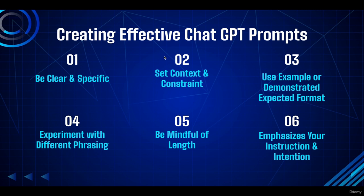The second aspect: set context and constraints. Provide relevant context or constraints in your prompts to guide the model's understanding. Specify any limitations, requirements, or boundaries to ensure the model generates responses within the desired scope. If you want ChatGPT to be as creative and imaginative as possible, don't have too many constraints. If you want a very specific output, add relevant context and constraints.